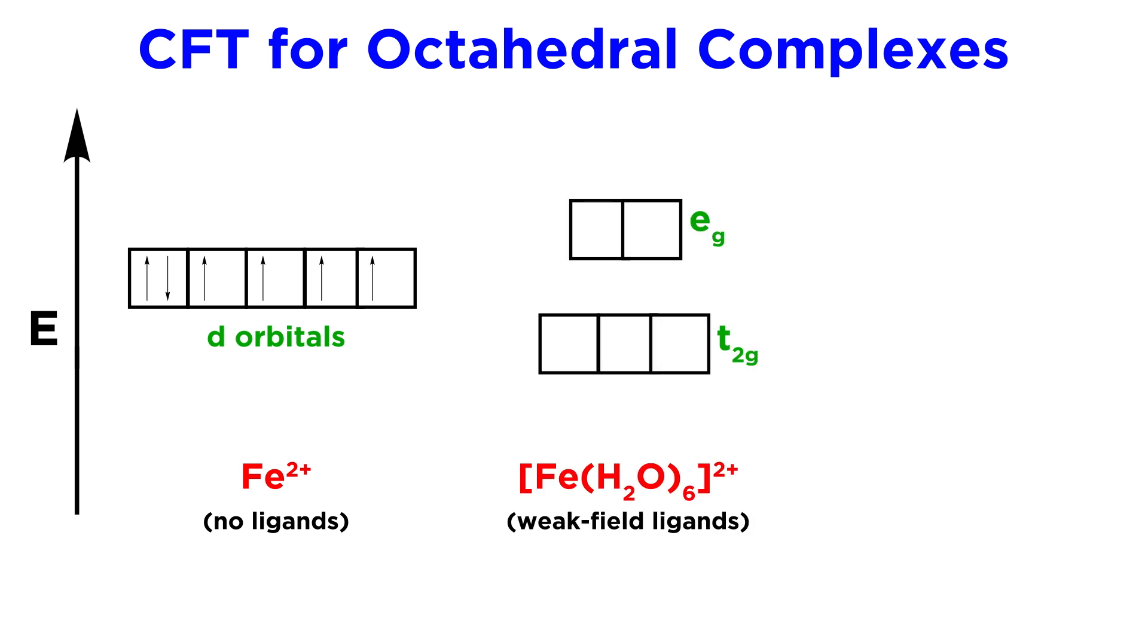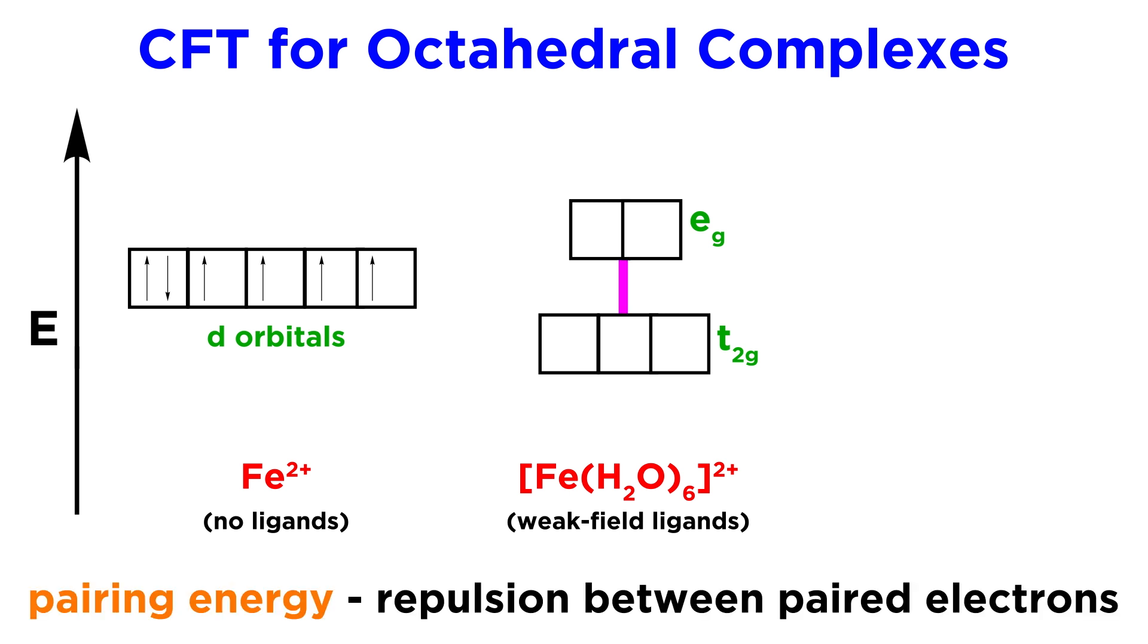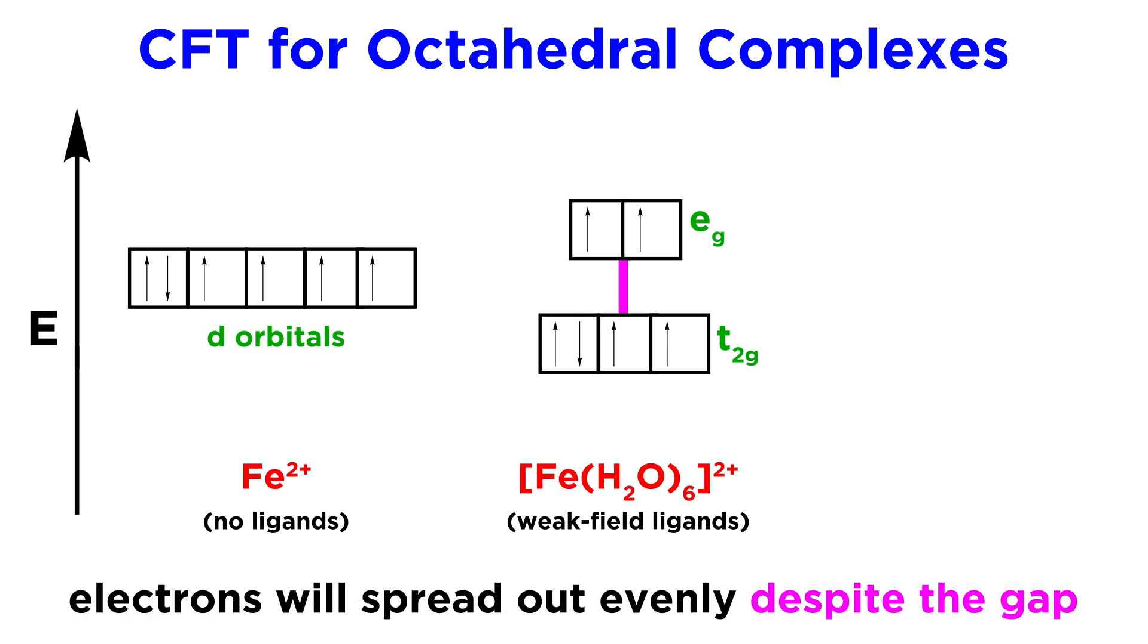If the metal is participating in a complex with weak field ligands, the difference in energy is small and not enough to overcome the pairing energy, or the repulsion generated by doubling up electrons in an orbital. In such a case, they will spread out evenly, putting unpaired electrons in the eg orbitals before the T2G orbitals are completely full. These are called high spin complexes.